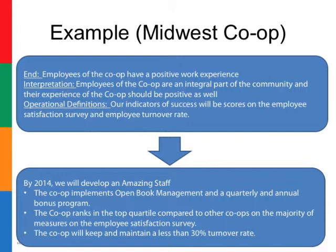So how does this link to his ultimate strategic plan? Here are the strategic objectives that he's put into place. By 2014, we will develop an amazing staff. The co-op implements open book management in a quarterly and annual bonus plan — all measurable. The co-op ranks in the top quartile compared to other co-ops on the majority of the measures of the employee satisfaction survey, tied to a specific time and a specific amount. And finally, the co-op will keep and maintain less than 30% turnover rate.